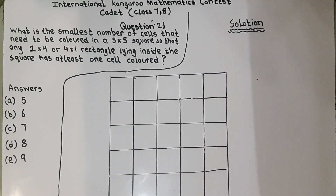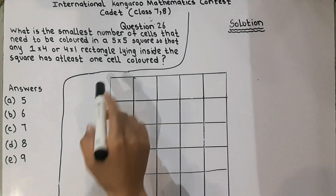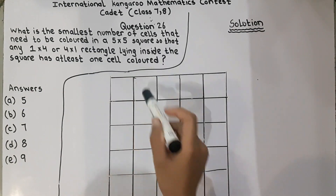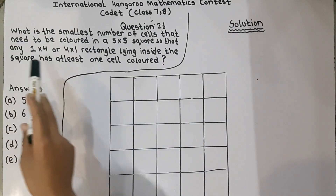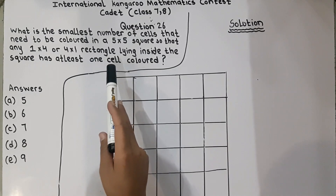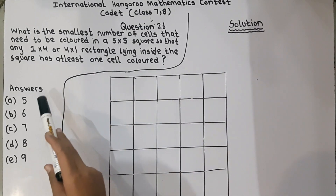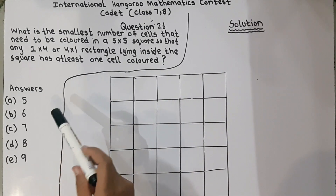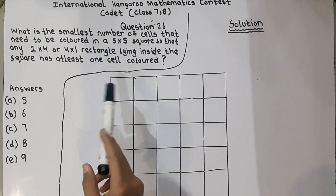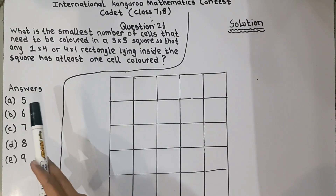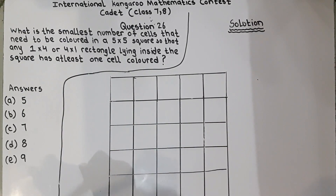Hello everyone, I am Hussain and I am back with another problem of IKMC for levels 7 and 8. The question is: what is the smallest number of cells that need to be colored in a 5x5 square so that any 1x4 or 4x1 rectangle lying inside the square has at least 1 cell colored.